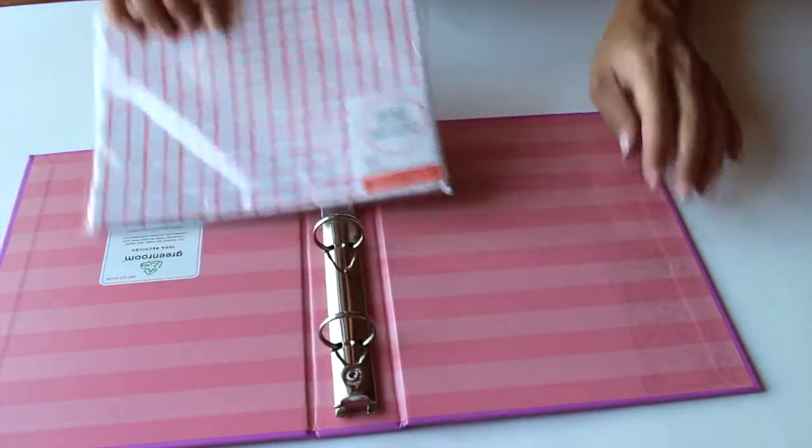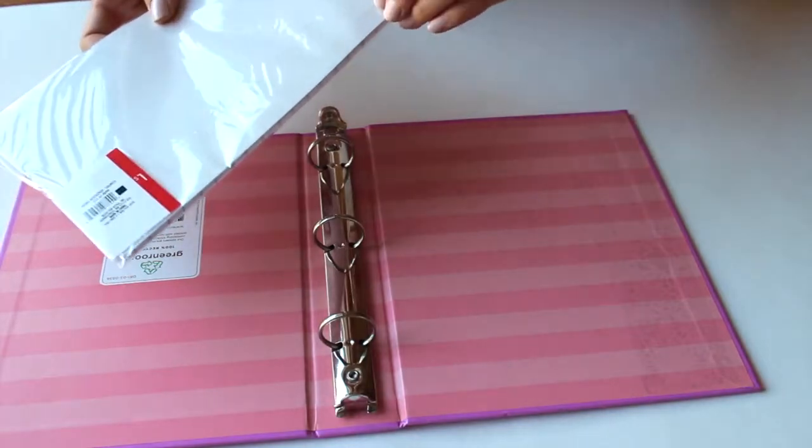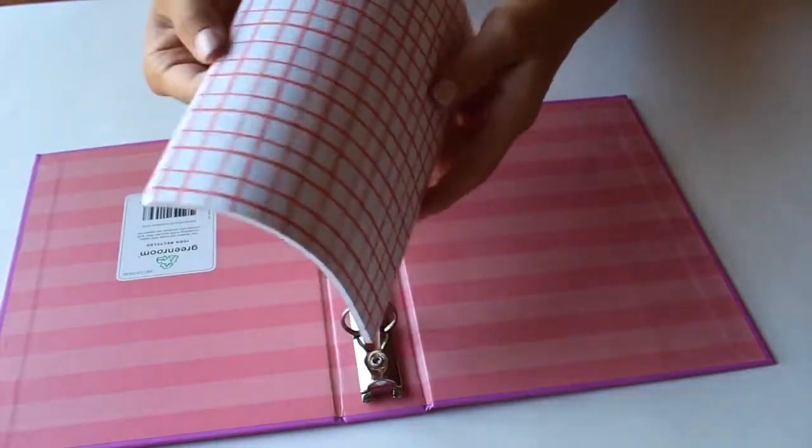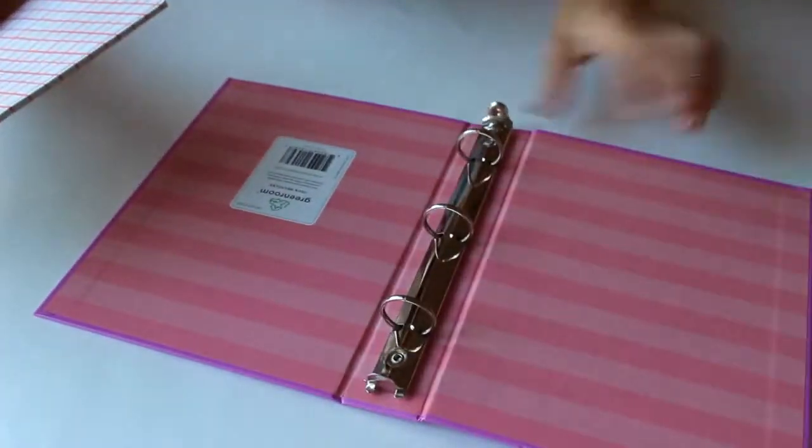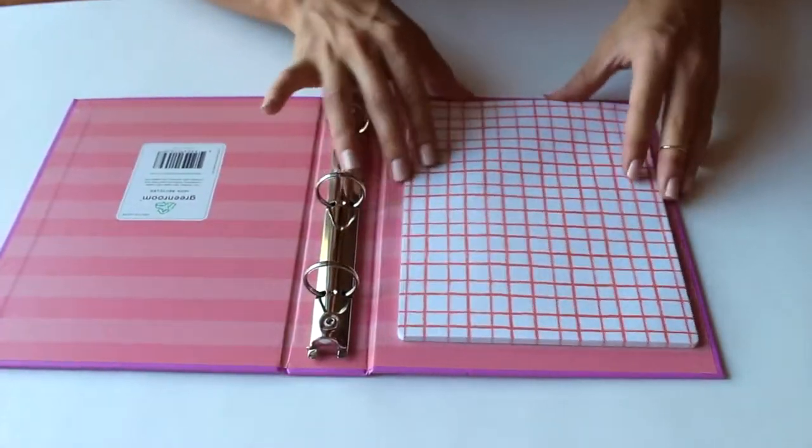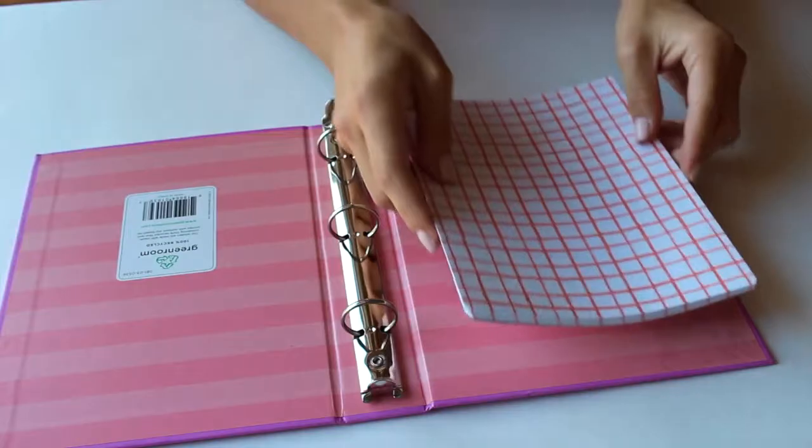I got this notepad at Target in the dollar section. It's actually like a memo mousepad or whatever, but I just opened that up and stuck it on the inside of my binder so that whenever I have an idea or I need to make a to-do list or write something down that's on my mind, I can just simply open it and write it there.